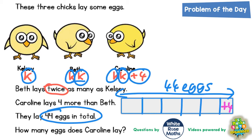In each of the five sections we're going to write a K, because we've got five K's across all three chicks: K, K, K, K and K. So what we're saying is K K K K and K plus an extra four is equal to 44.